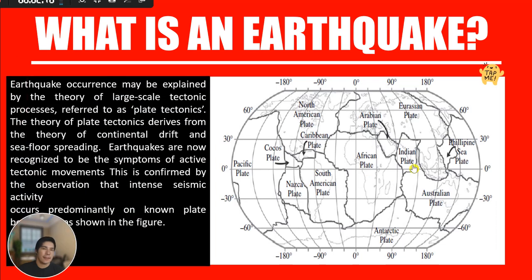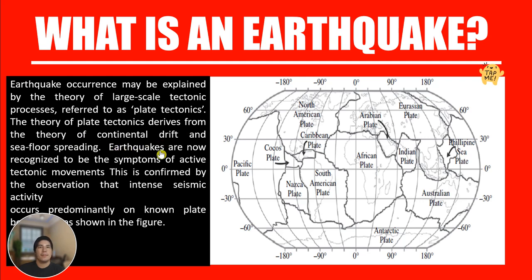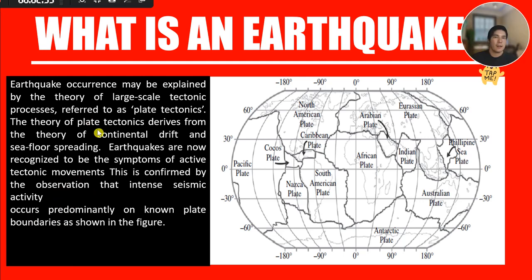Earthquake occurrence may be explained by the theory of large-scale tectonic processes referred to as plate tectonics. The theory of continental drift and sea-floor spreading predicts that earthquakes are recognized to be the symptoms of active tectonic movements. This is confirmed by the observation that intense seismic activity occurs predominantly on the plate boundaries, as shown in the figure.